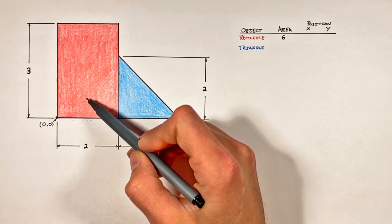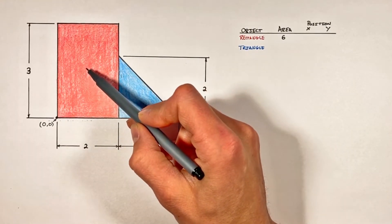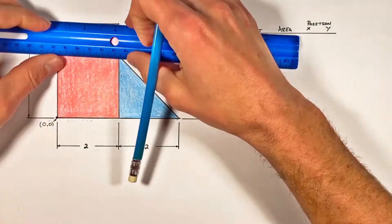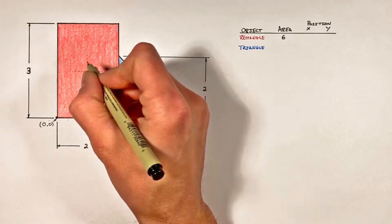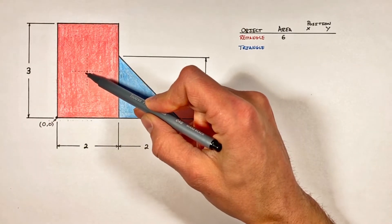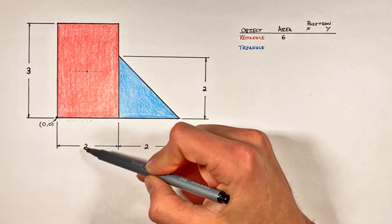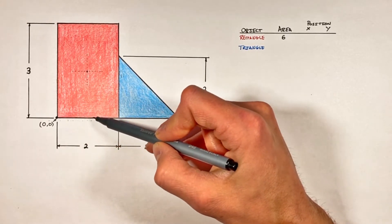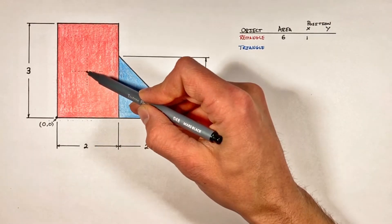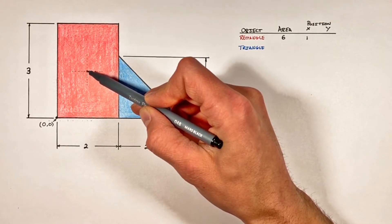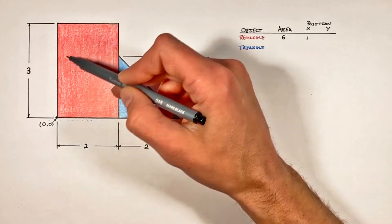The center of mass or center of area of this block is going to lie right in the middle, both horizontally and vertically. The horizontal position of the center of this block is 1 — that is, half the width of the block. Vertically, the center of area is halfway up the block, so it's going to be 3/2, which is 1.5.